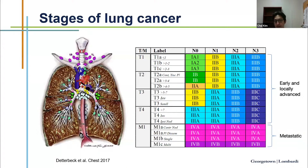M means metastasis. If you have one lesion in the contralateral lobe, that gives you M1A disease. A single extra-thoracic organ metastasis is M1B. Multiple metastases outside the thorax in different organs becomes M1C. Staging is very important. You don't need to remember all the details, but staging drives a lot of our treatment decisions when taking care of patients with lung cancer.